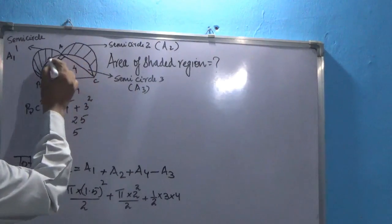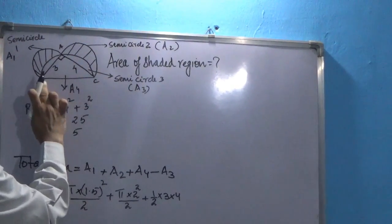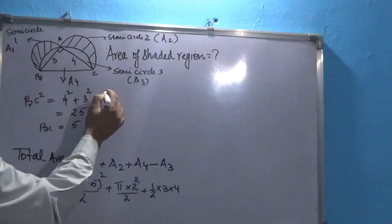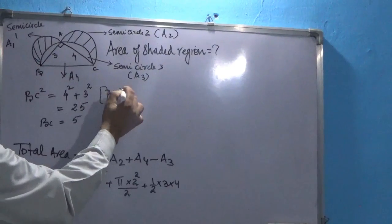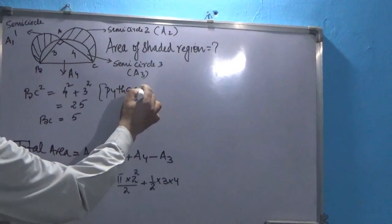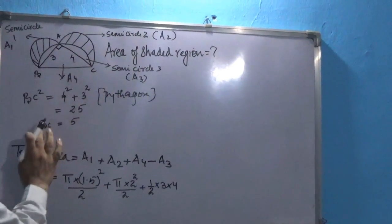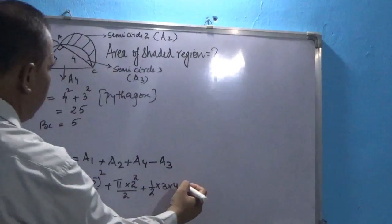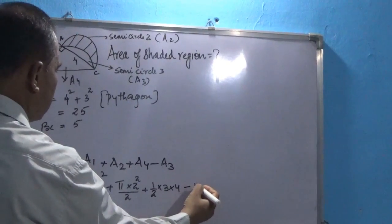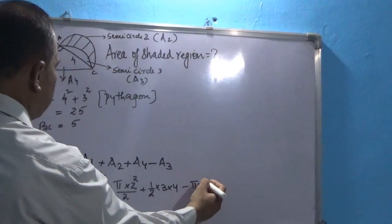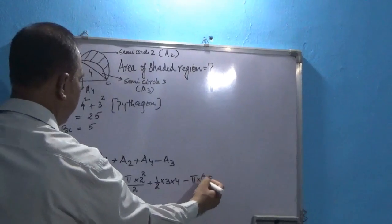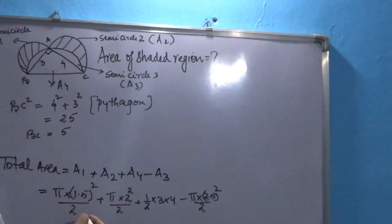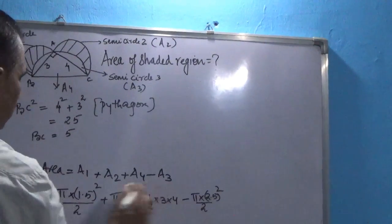For the bigger semicircle, the diameter is not directly given, so we use the Pythagorean theorem to find BC = 5. This becomes the diameter, so the radius is 2.5. The area of the bigger semicircle is π × 2.5² / 2.